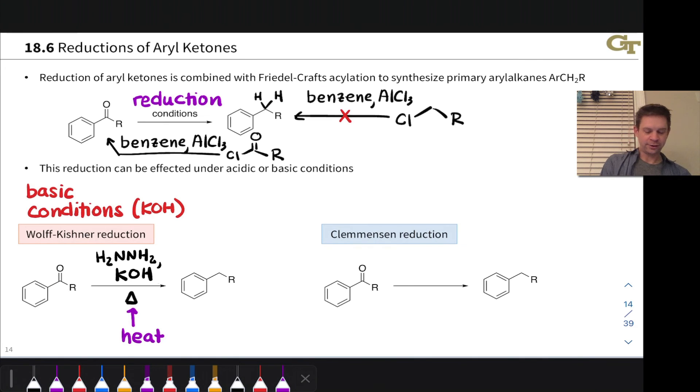Under acidic conditions we can use the Clemmensen reduction. And this makes use of a metal, specifically zinc mercury amalgam, which is a kind of mix of zinc and mercury together with hydrochloric acid.